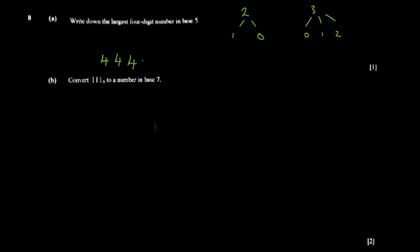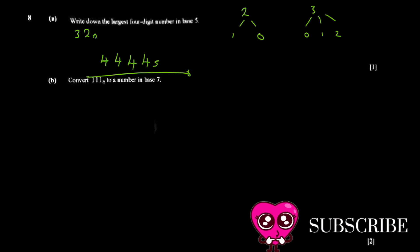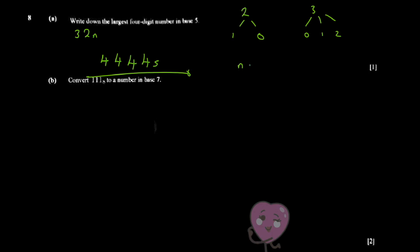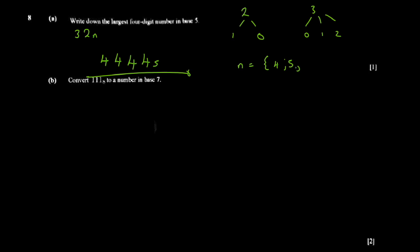The tricky part is this: if you forget it, you lose marks. Sometimes they ask you something like '32 in base n — find the possible values of n.' Since 3 is included, n cannot be base three or lower; it has to be higher, so n could be four, five, six, seven, eight, nine, ten, and so forth. For this question, the answer is simply 4444 in base five.